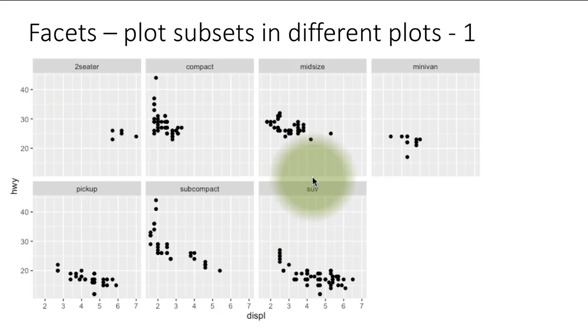That's a scatter plot of displacement versus highway mileage only for the two-seater cars. This is the same plot for SUVs and so on. Essentially what we want to do is ask the system to split up the data into cars of different classes and plot the scatter plot for each class separately.